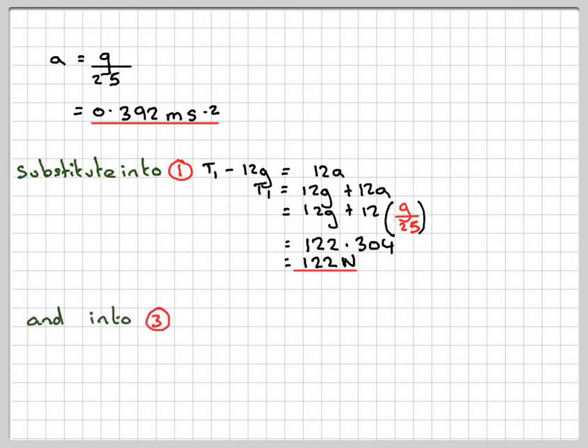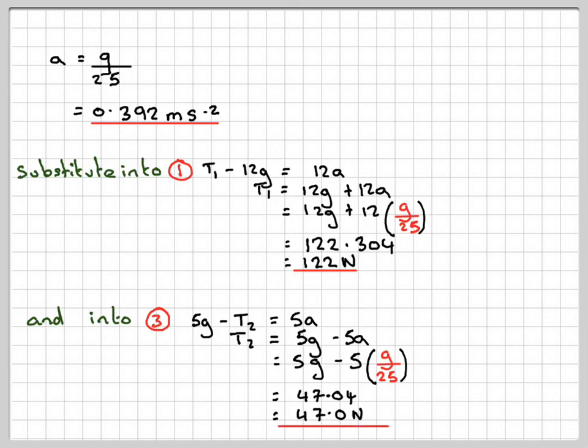And if we substitute into 3, we're going to have 5g minus T2 is equal to 5a. T2 is going to be 5g minus 5a, which is going to give me 5g minus 5 times the acceleration, which gives me 47.0, which is 47.0 Newtons.